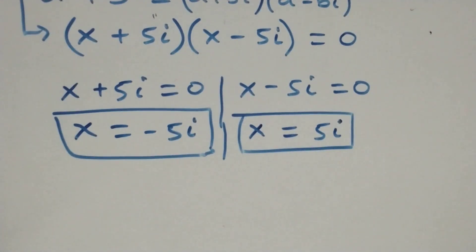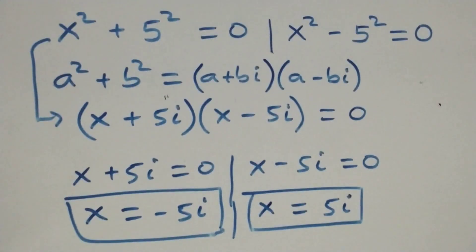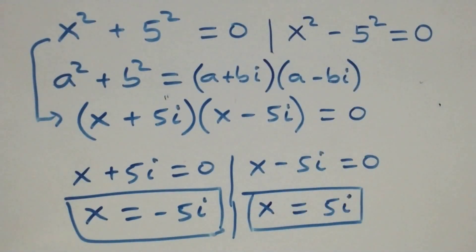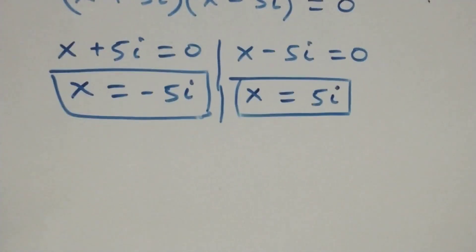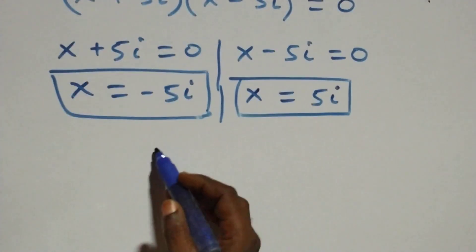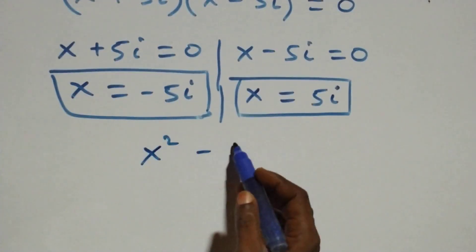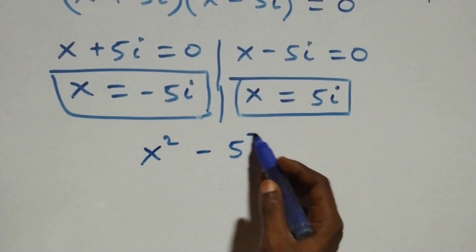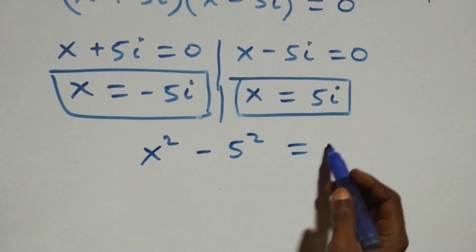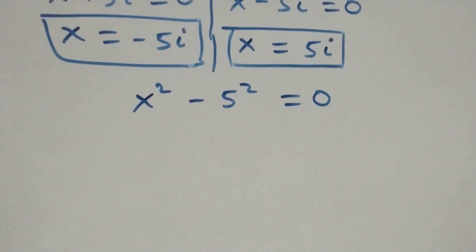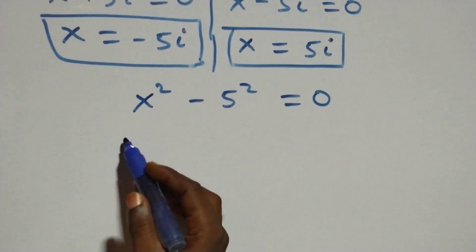From the second case, x squared minus 5 squared equals zero. This also follows the difference of two squares.